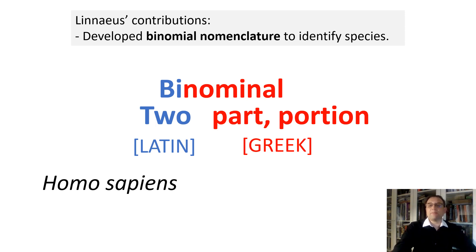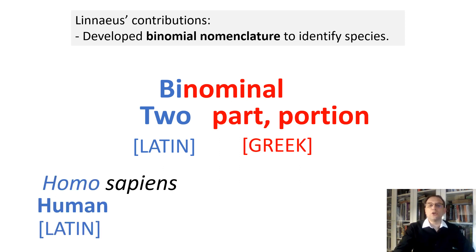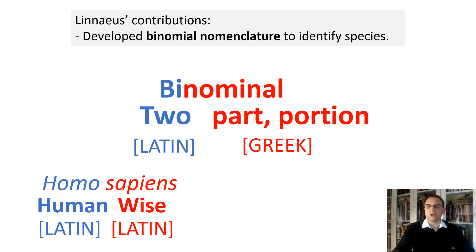For example, the species that all living human beings belong to is Homo sapiens. The name consists of two words: Homo means human in Latin, and sapiens means wise in Latin. In Latin, the adjective can be placed after the noun, unlike in English. So the name of the human species would be read as 'wise human' — a very optimistic name we gave our species.